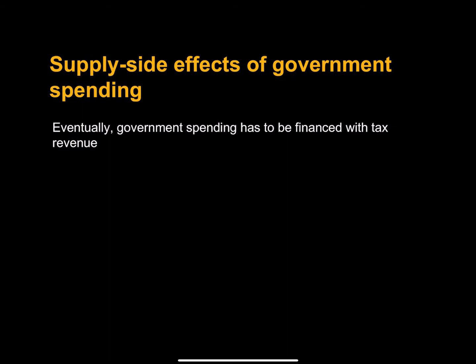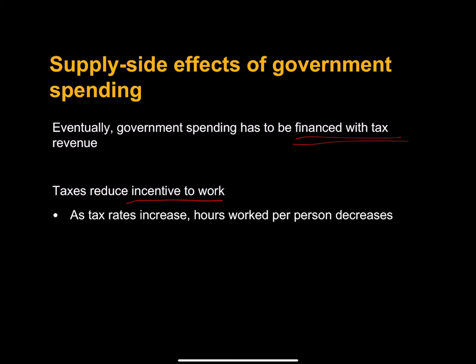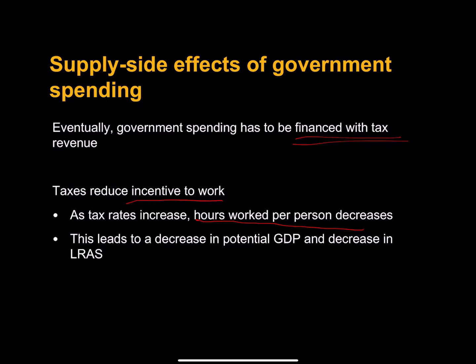The final consequence of deficits involves the supply side. Taxes reduce consumption expenditure, but there's another problem with taxation as well — taxes reduce the incentive to work. There's a trade-off between work and leisure: if we increase taxes, we make working less attractive. As tax rates increase, hours worked per person decrease, which leads to a decrease in potential GDP — not just in the short run, but in the long run as well.